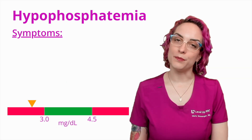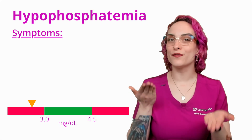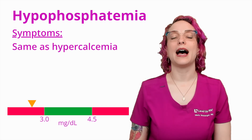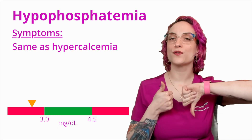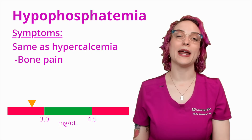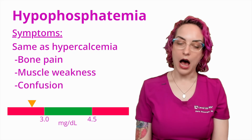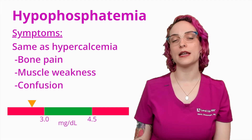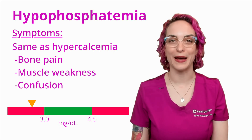What are some symptoms of hypophosphatemia? Because of that inverse relationship with calcium, they're going to be the same as hypercalcemia. So when calcium is high and phosphorus is low, we're going to see things like bone pain, muscle weakness, GI upset, confusion, kidney stones, and lots of different things that can be going on. Just refer back to those hypercalcemia findings.